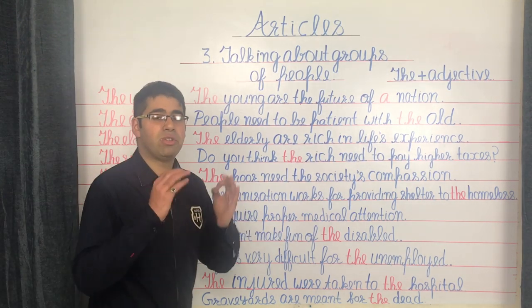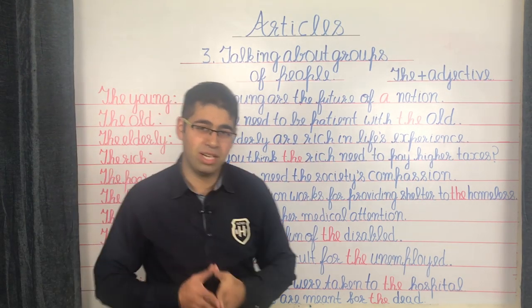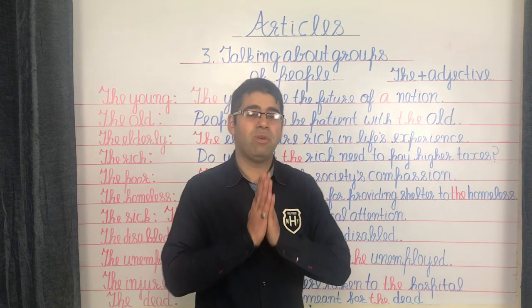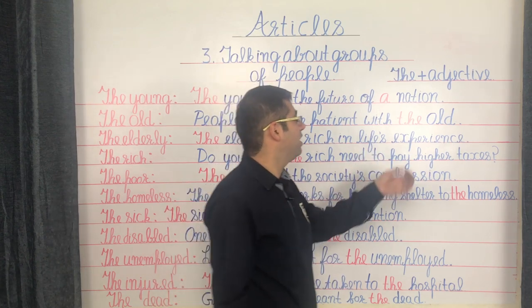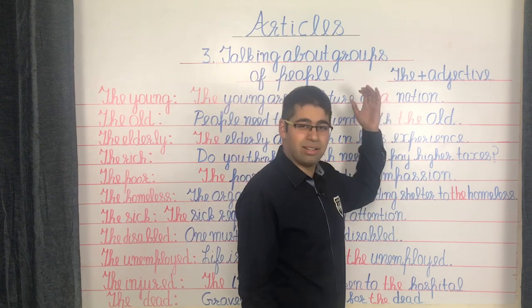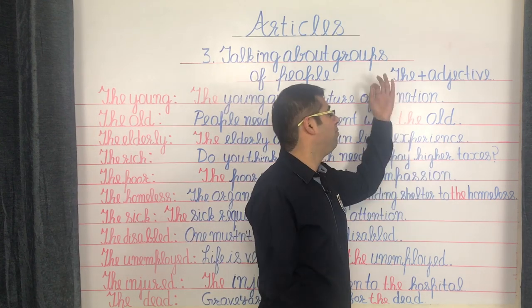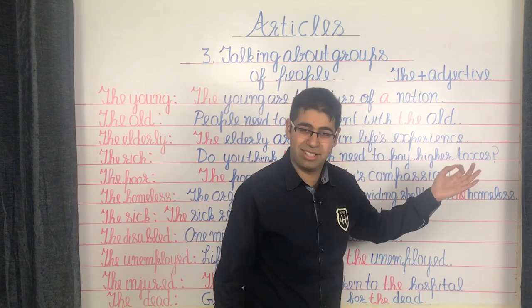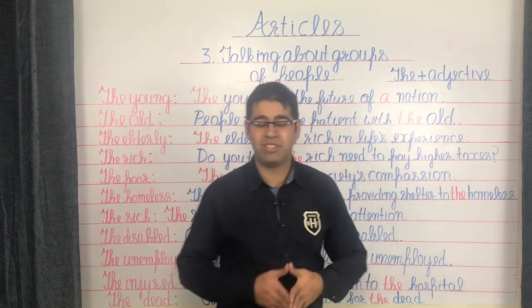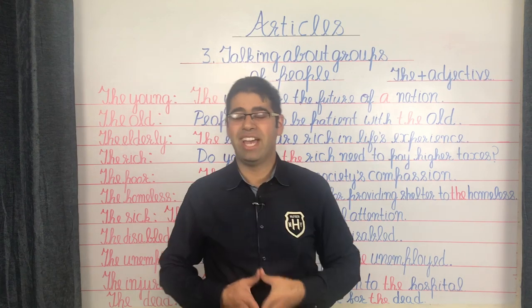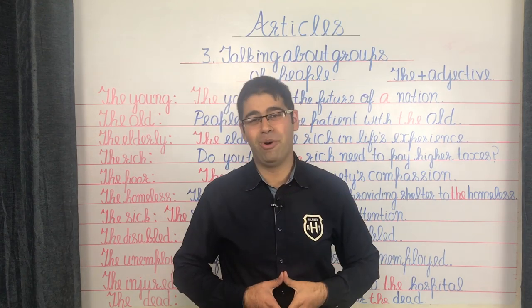That covers rule number 3: whenever you wish to talk about people as a group, you express it as the article THE followed by the adjective. Let's move ahead to rule number 4.